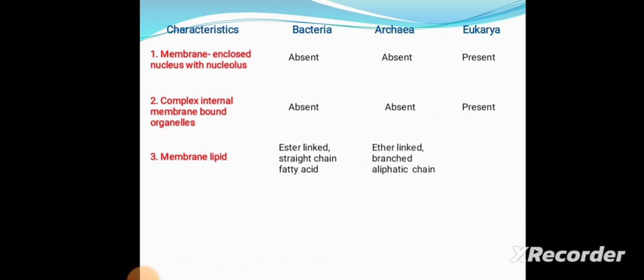Third is membrane lipid. In Bacteria, the membrane lipid is ester-linked with straight-chain fatty acids. In Archaea, the membrane lipid is ether-linked with branched aliphatic chains. In Eukarya, the membrane lipid is ester-linked with straight-chain fatty acids, similar to bacteria.